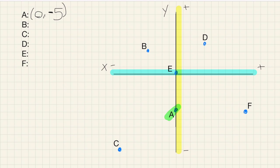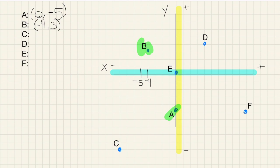Let's look at B. B is right here. I go over 1 through 5 — but wait, I want to correct that — it's actually negative 4. Then up 1, 2, 3. So B is negative 4, 3. I mark it down so I can catch mistakes, and in this case I did — I started at negative 5 but corrected to negative 4. Keeping yourself organized is very helpful to avoid errors.